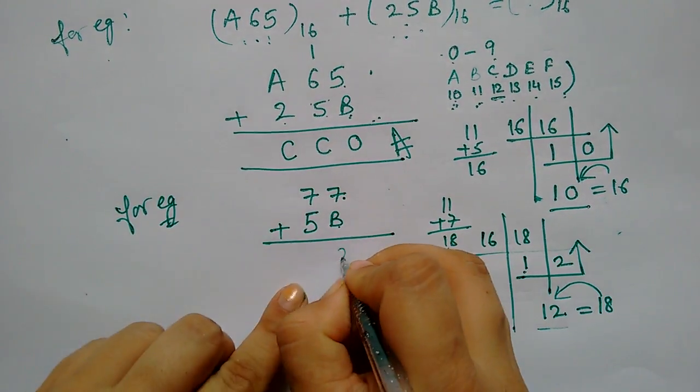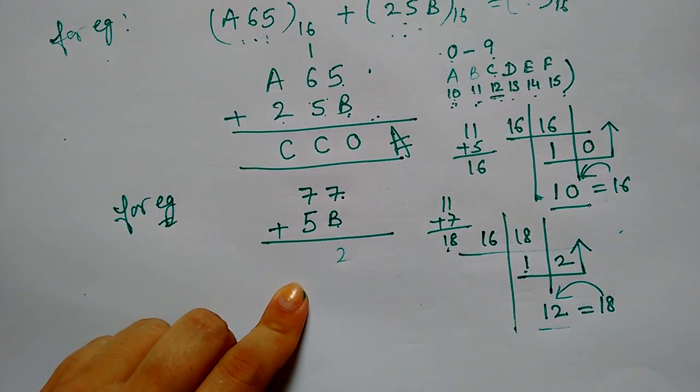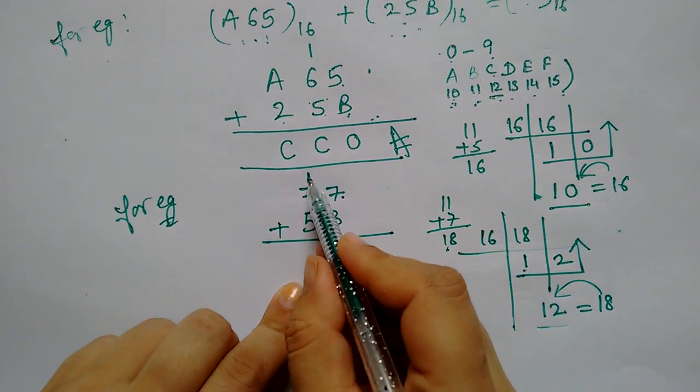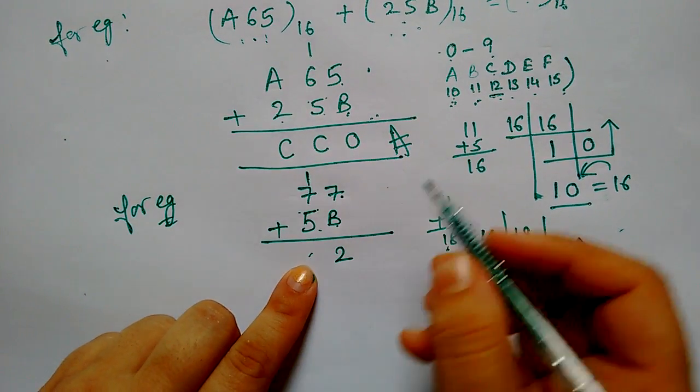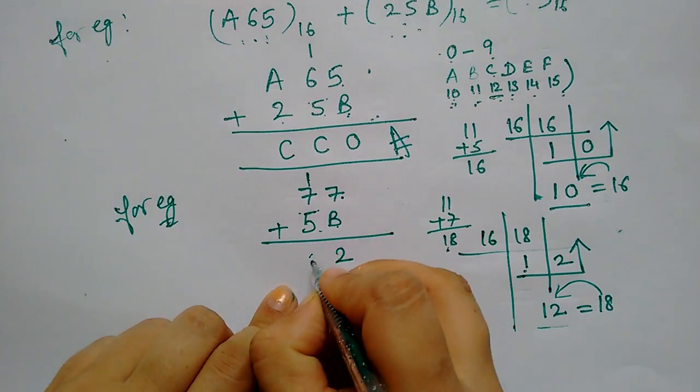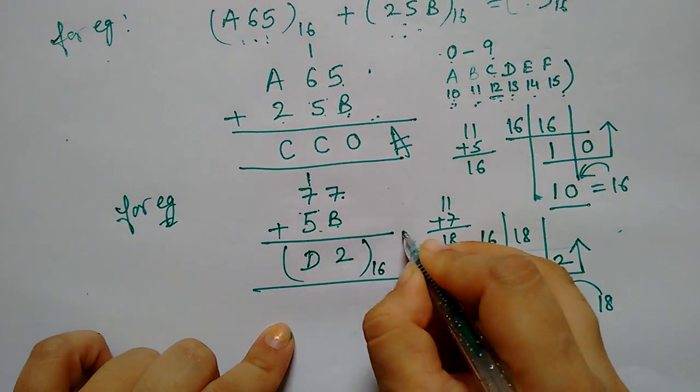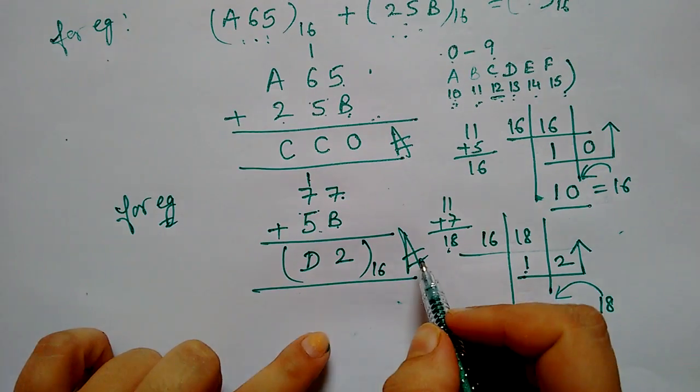Now 2 comes in result and 1 is carry. Now 7, 8, 9, 10, 11, 12, 13. Now what can we write 13? D. Here is D. This is your hexadecimal number. This is your final result.